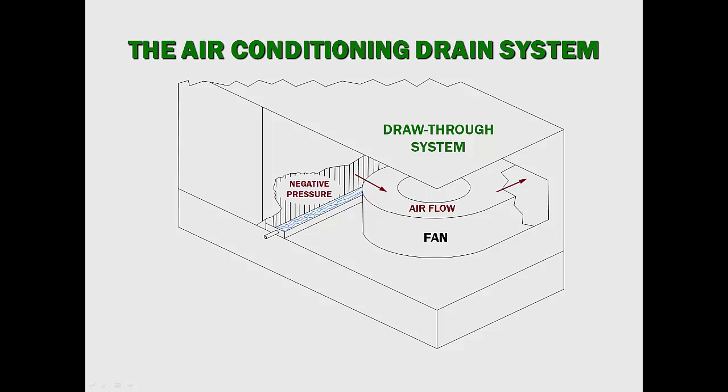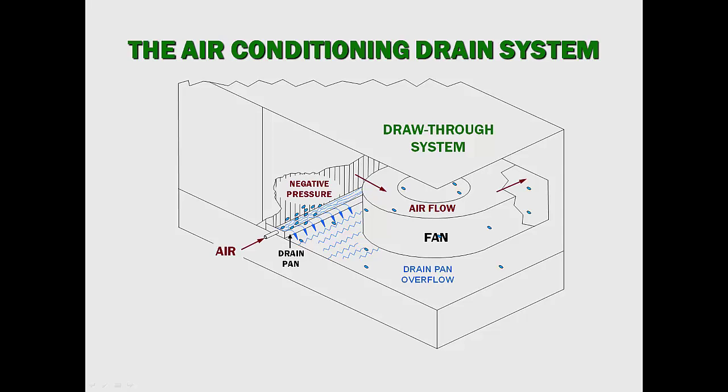To be effective, a drain system must overcome the pressures and airflow conditions created inside the drain pan compartment by the fan. Without an effective drain system, condensate flow is adversely affected. In draw-through systems, as illustrated here, water is blown back into the air handler, and drain pan overflow is common.